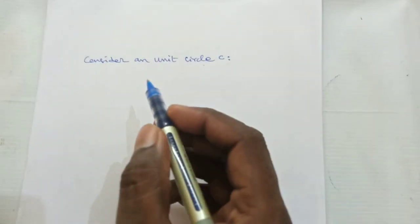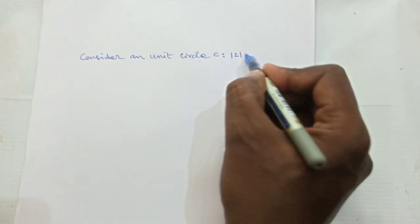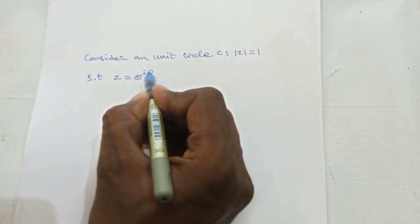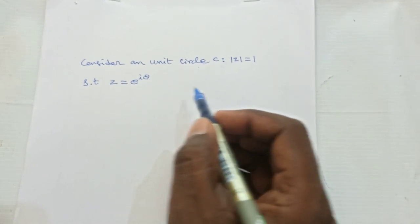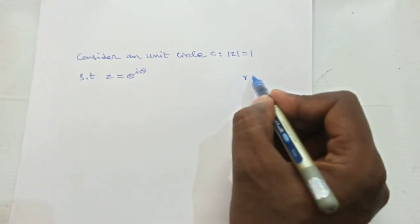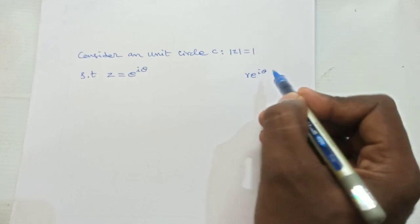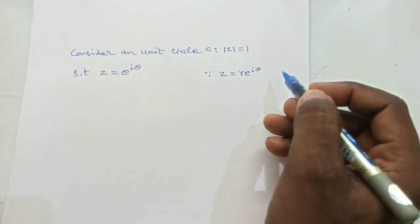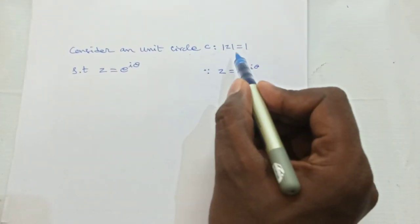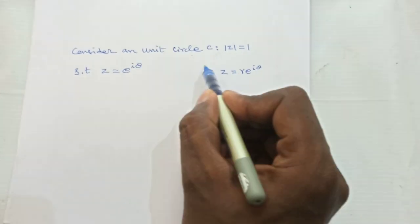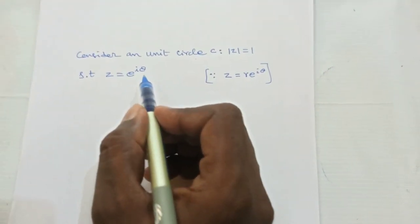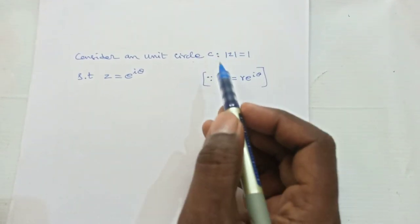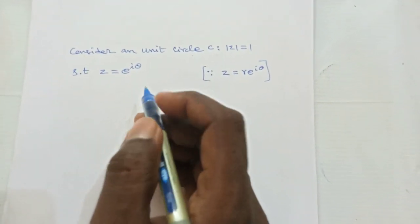In this type, consider a unit circle C where |z| = 1, such that z = e^(iθ). Every complex number can be written in polar form as r·e^(iθ). On the unit circle, radius r = 1, so it becomes simply e^(iθ). So always in this type, we consider a unit circle C where |z| = 1 such that z = e^(iθ).